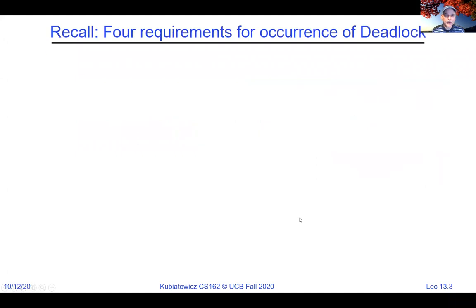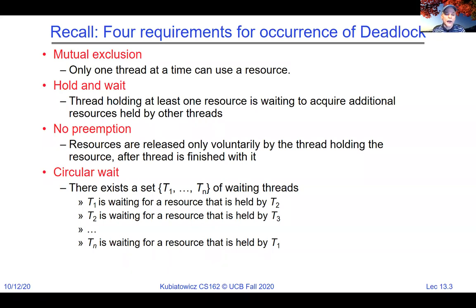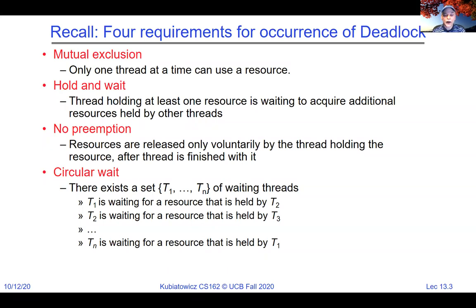We gave some examples and came up with four conditions for deadlock — necessary but not sufficient. You need all four, and that doesn't necessarily mean you have deadlock, but you might. Mutual exclusion means a resource can be held exclusively while waiting for others. Hold and wait means a thread holding a resource is waiting for another. No preemption means you can't take resources away. Circular wait means threads T1 through TN are all waiting for each other in a cycle.